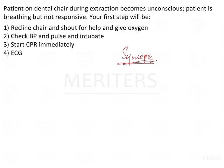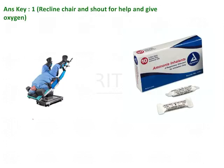As soon as this is done, you recline the chair and place the patient into the Trendelenburg position — where the head is taken below the level of the legs. This increases venous return to the heart and forces blood into the brain. This is the same concept used in Shirshasana, where increased blood flow to the brain helps the patient regain consciousness.